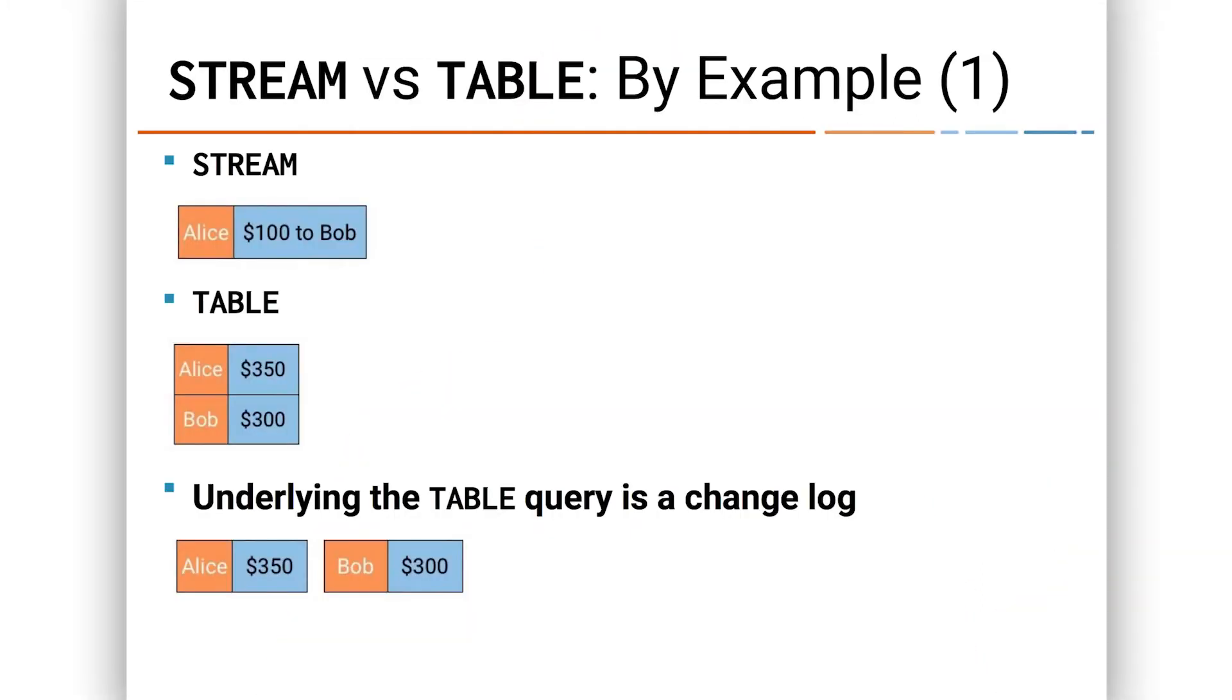Let's take a look. The transaction up top, the stream is Alice giving $100 to Bob. Alice is the key and the value is I give $100 to Bob. So now both the Alice and Bob values in the table have changed. Since Alice is giving money, rather than have $450, now she has $350. And Bob, rather than having only $200, he now has $300 because Alice gave him $100. So the current state of their accounts changed in ways that you'd expect.